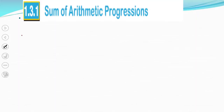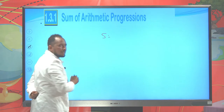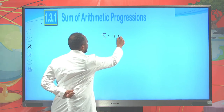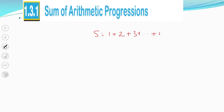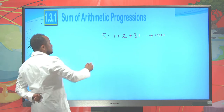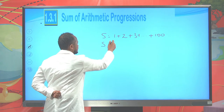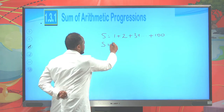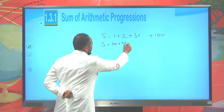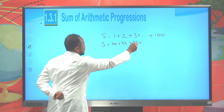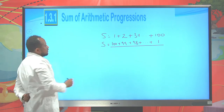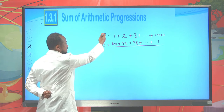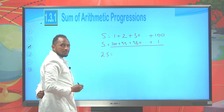Let's see how Gauss did it. The sum of the first 100 numbers is given as S = 1 + 2 + 3 + ... up to 100. This is the sum of the first 100 natural numbers. He then added this twice by starting from 100 down to 1: 100 + 99 + 98 + ... + 1. Adding these two expressions together gives twice the sum.